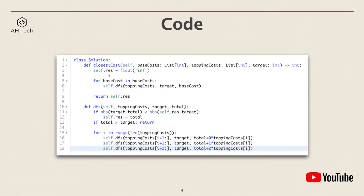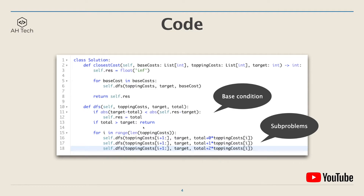First we create a class variable res initialized to positive infinity. Then for every cost in the base cost array we run a DFS function. The DFS function won't return anything. The base condition is: when the absolute difference between target and the current sum total is less than the difference between res and target, we update res to total. If total is bigger than target we just return from the recursive function. In the DFS we go through every cost in the topping cost array, try every possible combination of toppings, and then return res at the end.